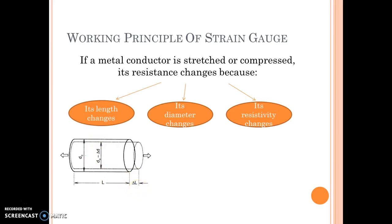But what actually makes the resistance change? This can be very easily stated by this formula which is well known to us: R is equal to rho L by A, where rho is the resistivity. D is the diameter which affects the cross-section area, and L is the length.